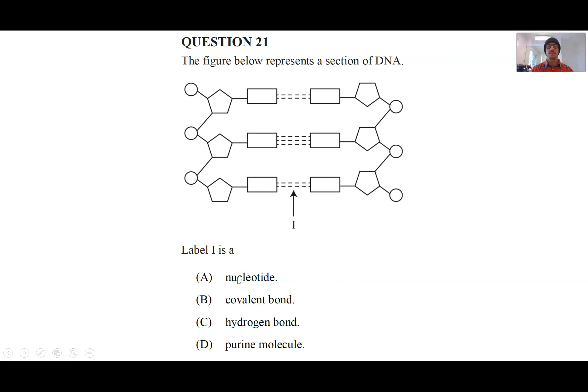Well, a nucleotide was what we just spoke about before, and this is clearly something different. We said that covalent bonds are really strong bonds that create up the sugar phosphate backbone of DNA. We said there is another type of bond that holds the nucleotide bases together, and that was a hydrogen bond. So the answer is C. Purine molecule was one category that two of the bases would fit into. The other was pyrimidine.